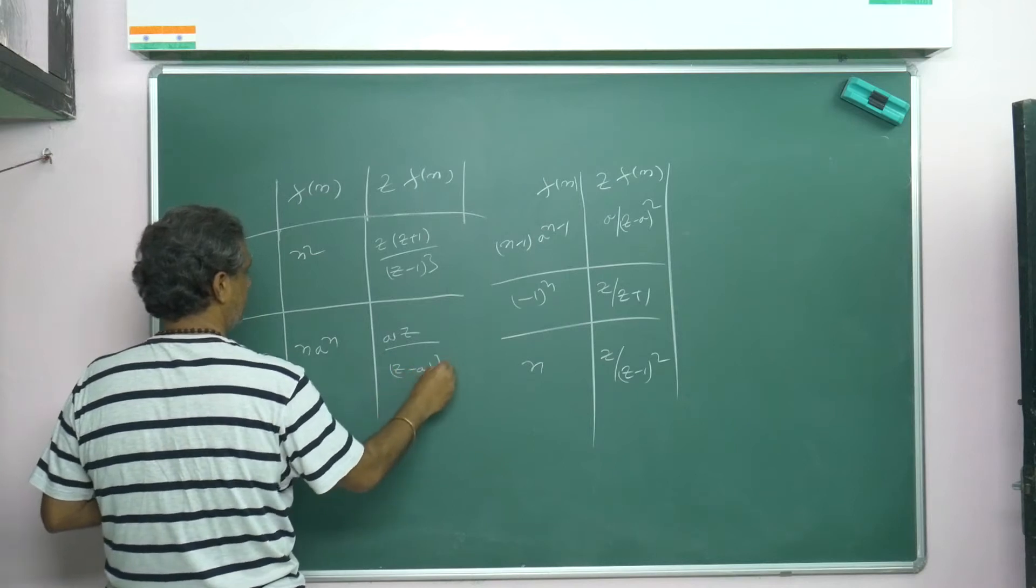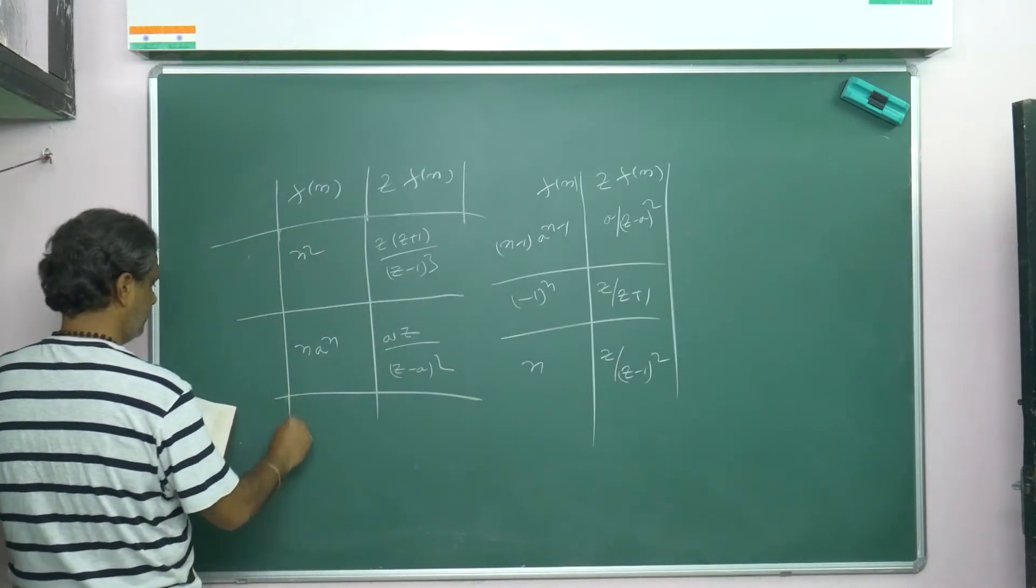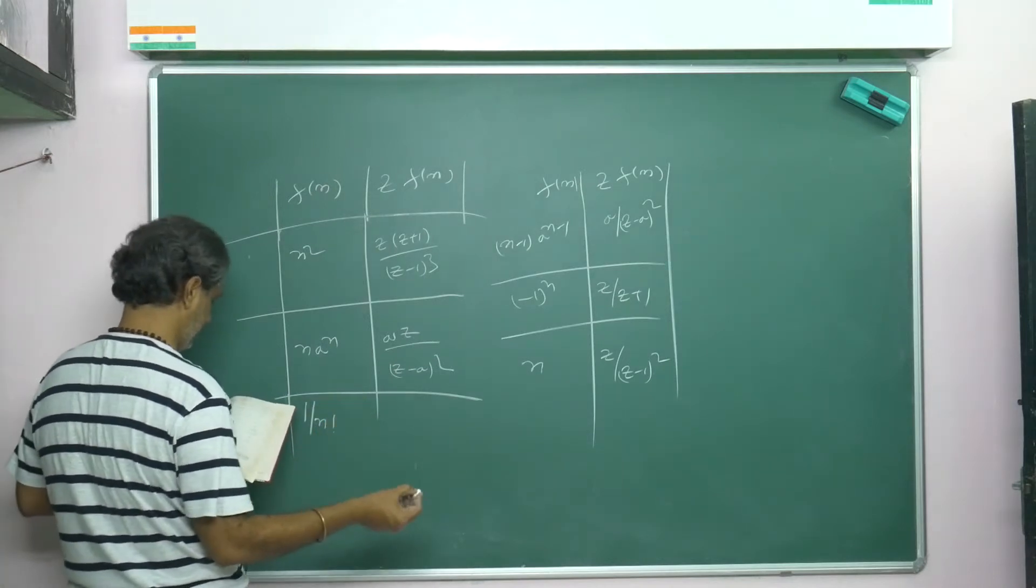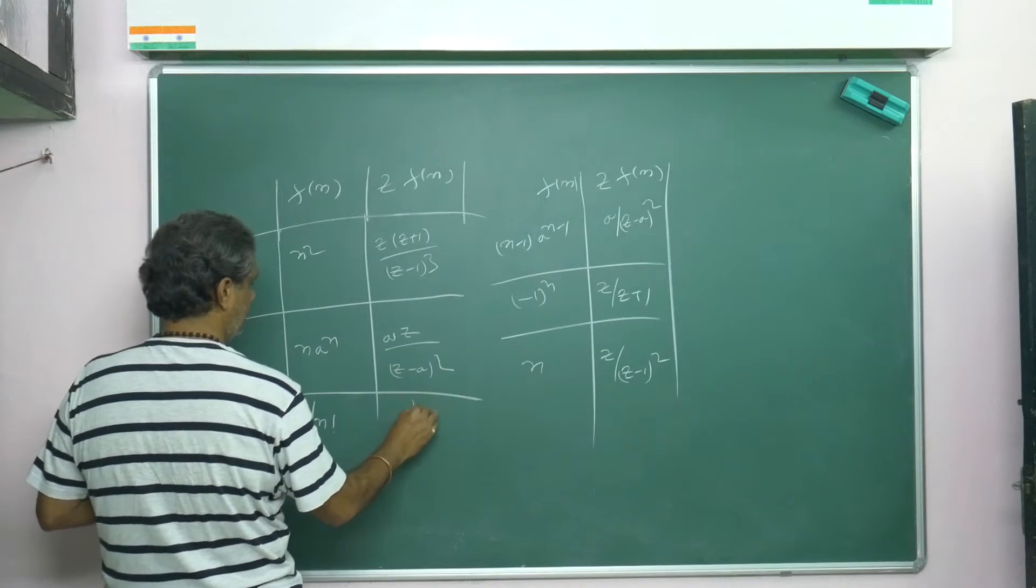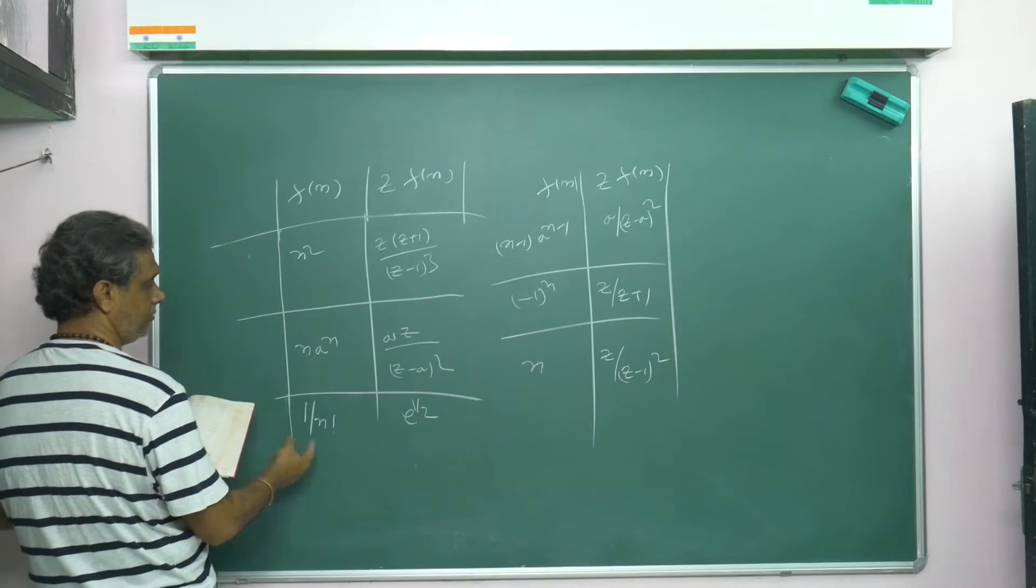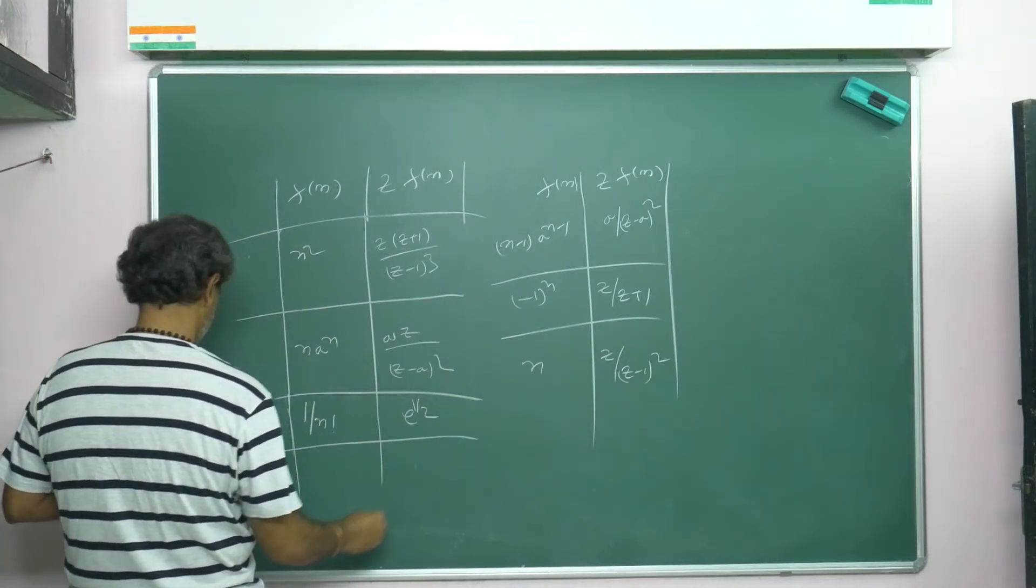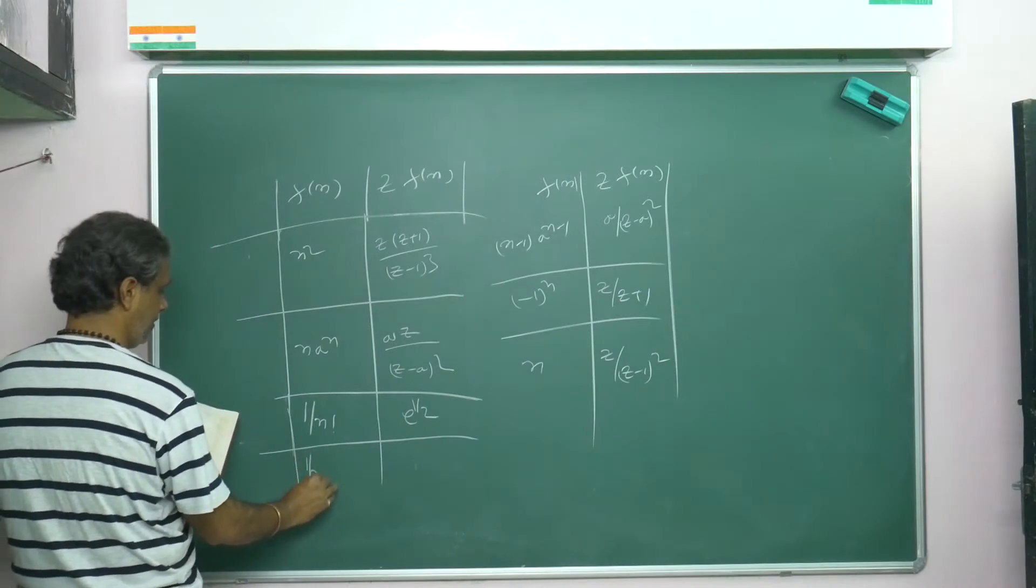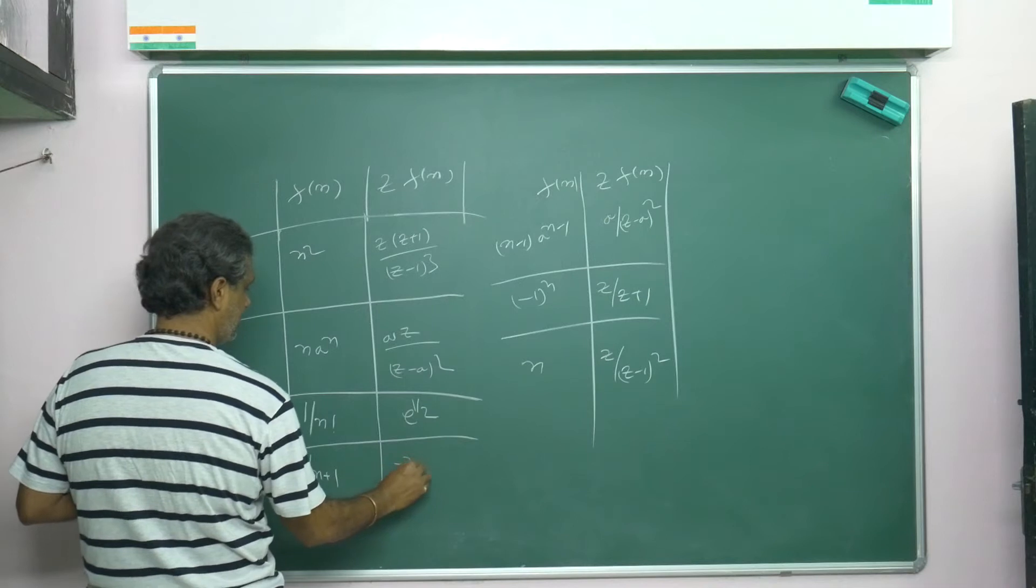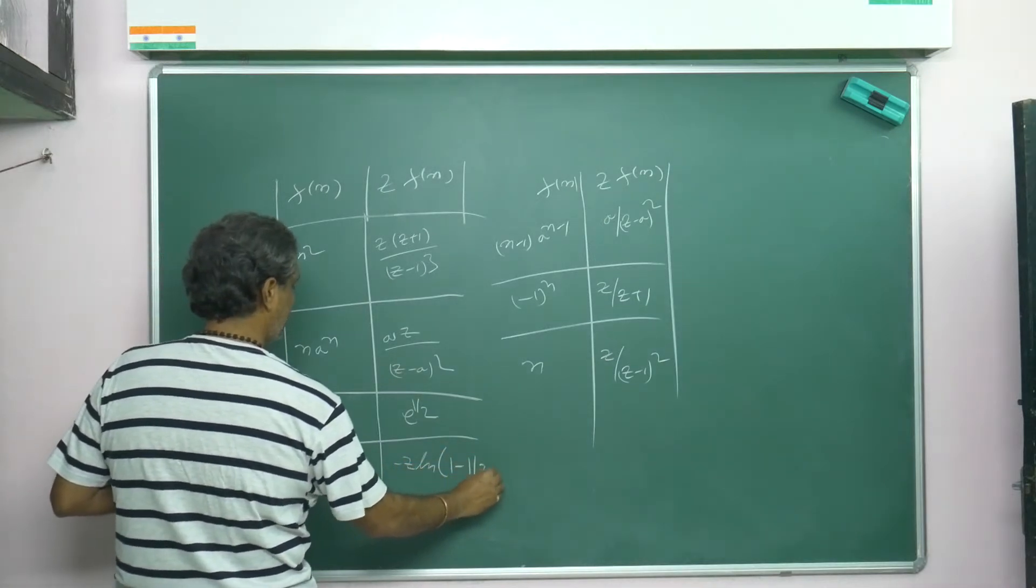Then Z{1/(n!)} or Z{1/(k!)} equals e to the power (1/z). They may write Z{a^n/(n!)} also. While doing the problem I will tell you, don't worry. Then Z{1/(n+1)} or Z{1/(k+1)} equals minus z log(1 - 1/z).